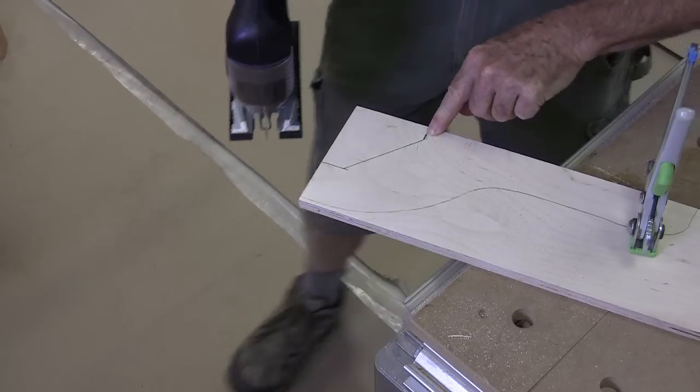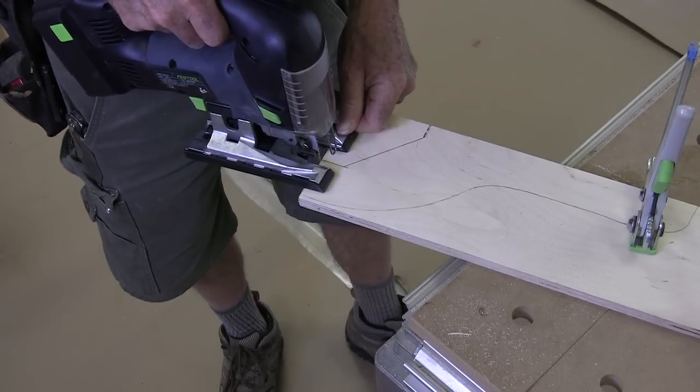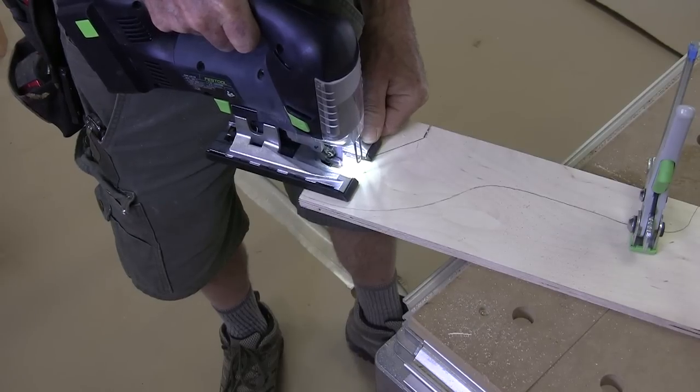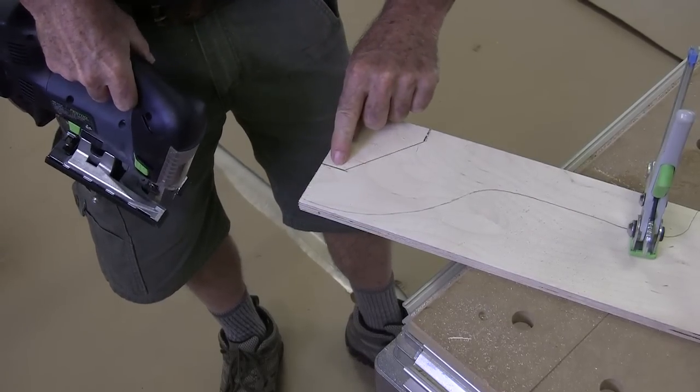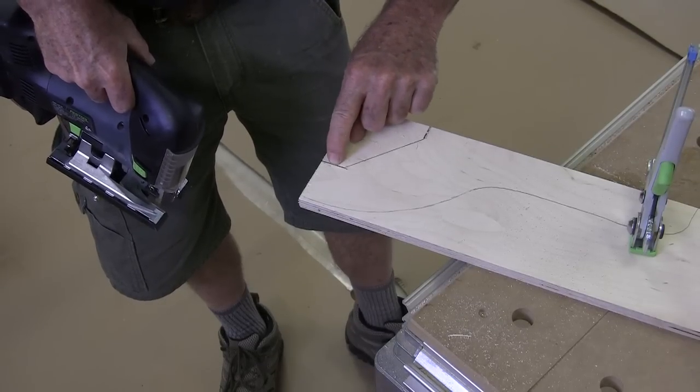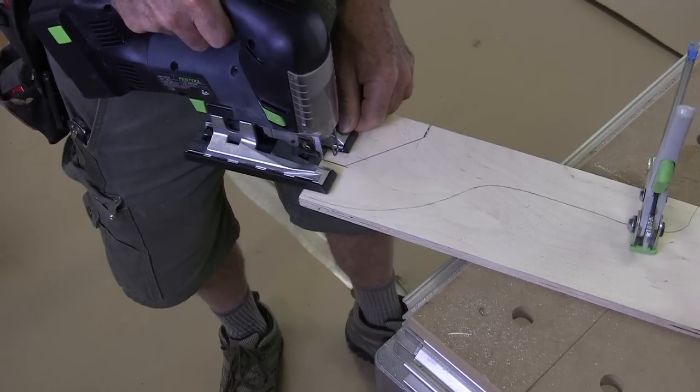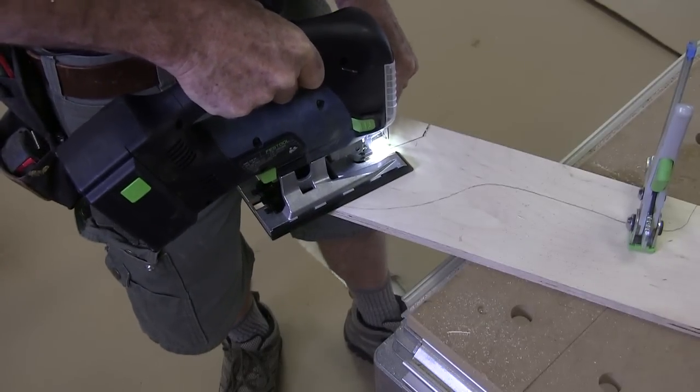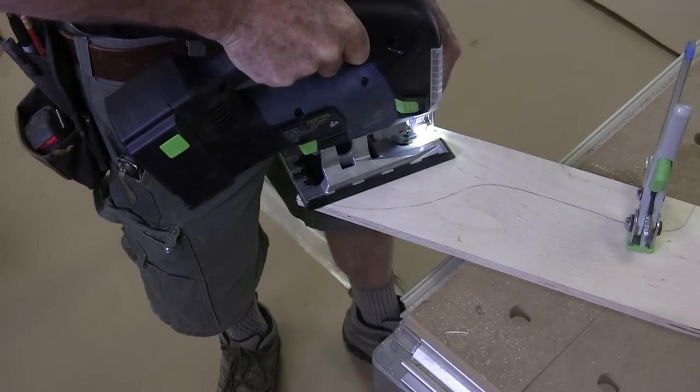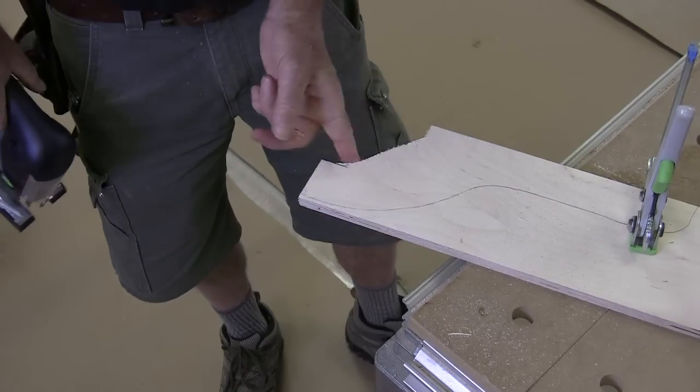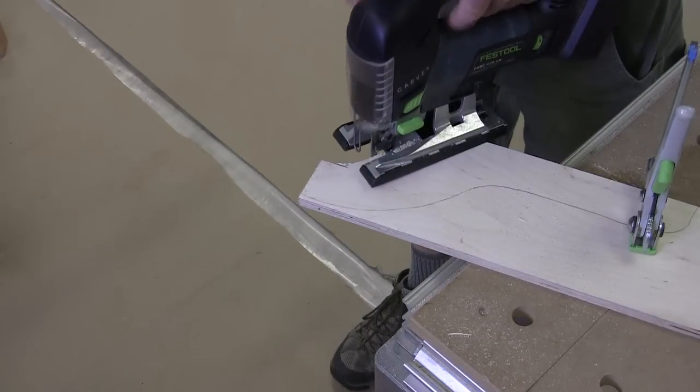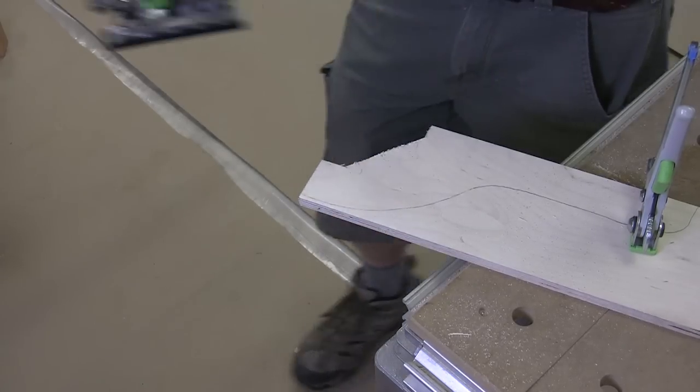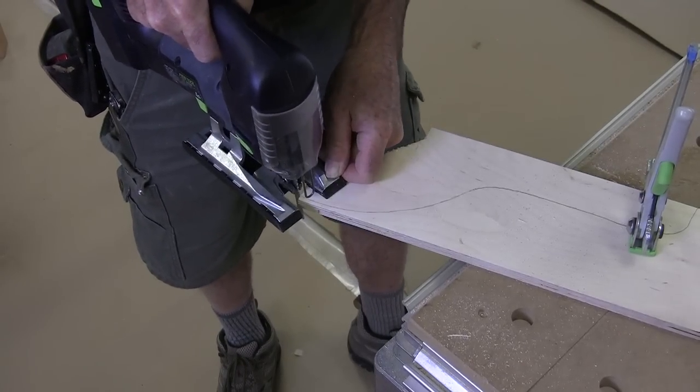You want to be sure that you cut right alongside those pencil lines. Split that graphite if you can. With this new Carvex Festool jigsaw I can get right down the center of the pencil line because there's such a nice bright light right on the face of the jigsaw. And this part in here doesn't matter at all. You just need to remove that waste.